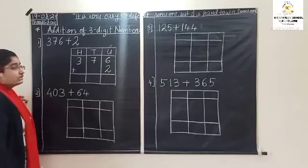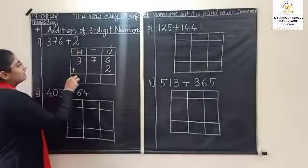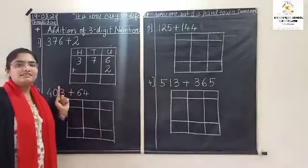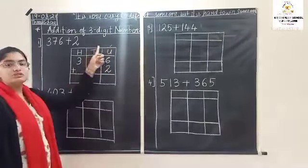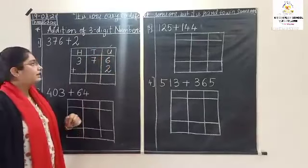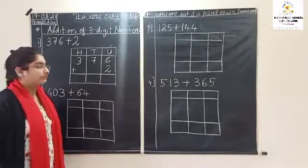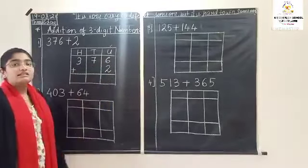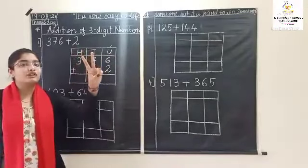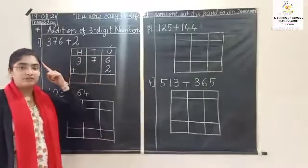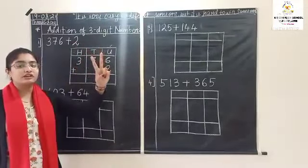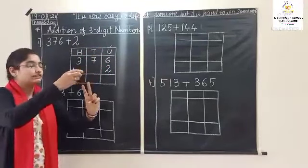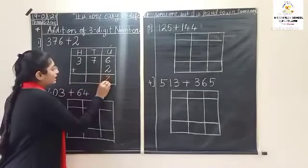Now start the addition. Always remember, you should start the addition from units place. See the first number: six plus two. Keep six in mind, remove two fingers. After six — seven and eight. So the answer is eight here.